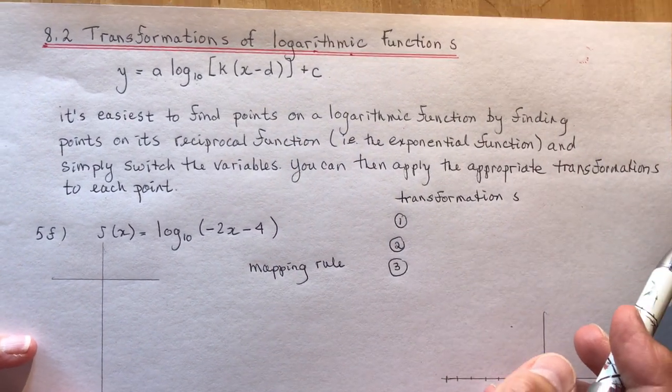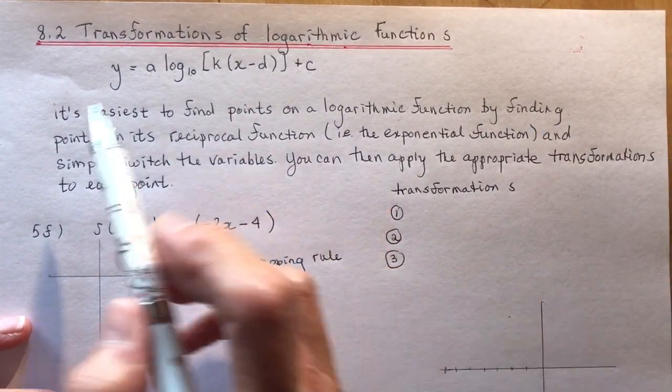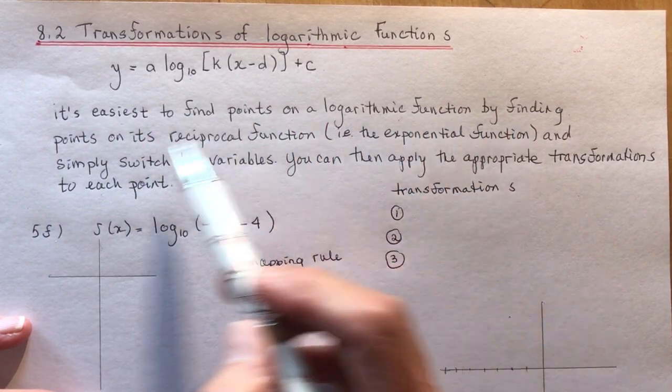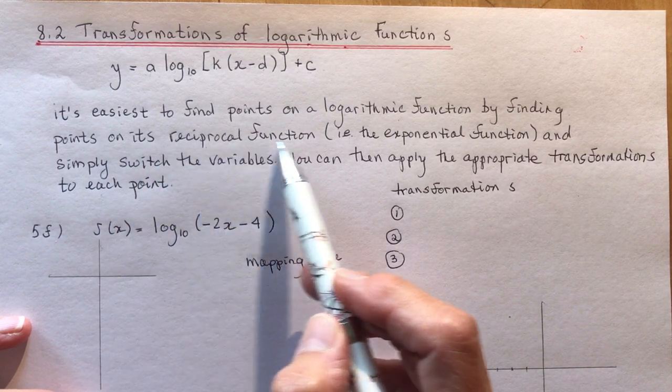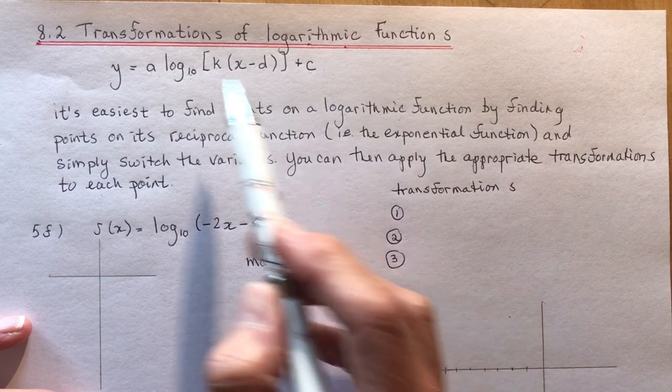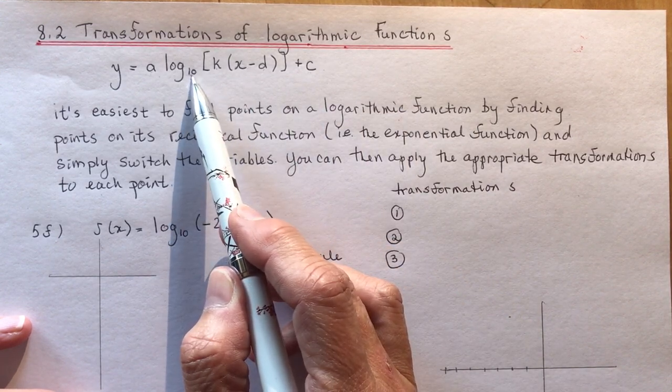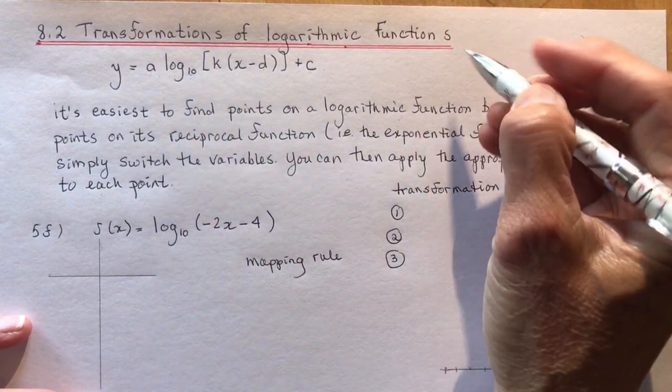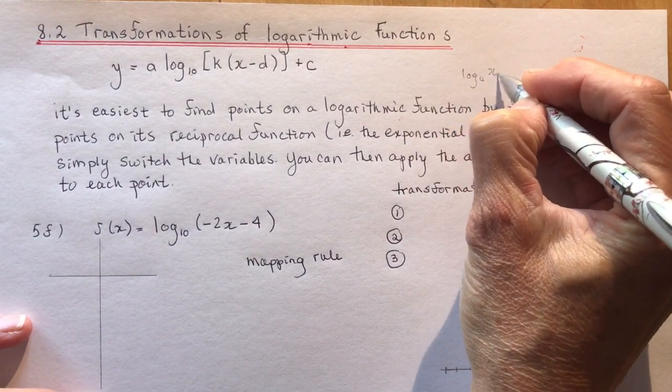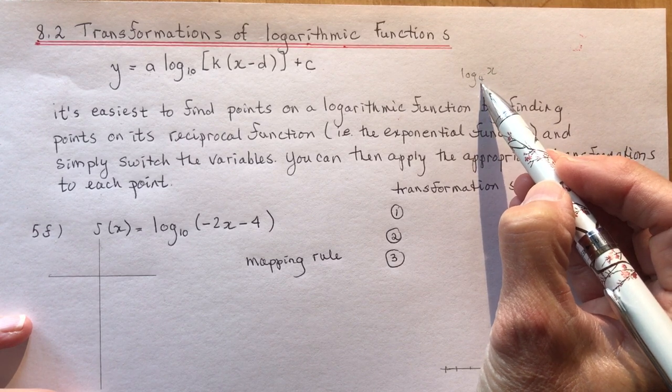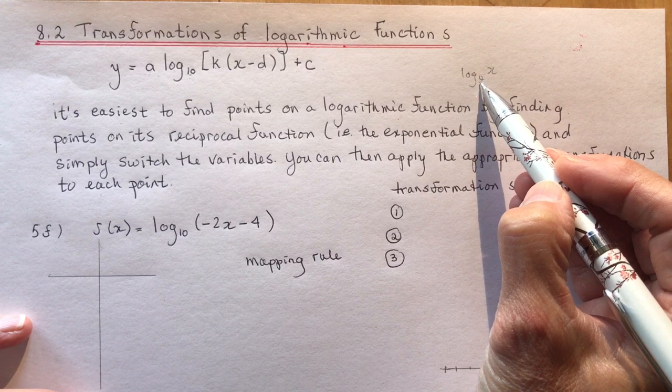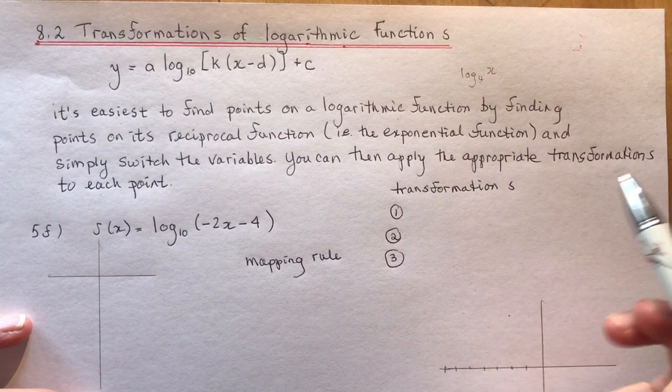So I mentioned this in 8.1 that it's easiest to find points on a logarithmic function by finding the points on its reciprocal function, i.e. the exponential function. So for this, the exponential function is 10 to the X. If I had a function that was log 4 X, then this would be 4 to the power of X. So whatever the base is, that's the base of your exponential function that you want to find the points for.